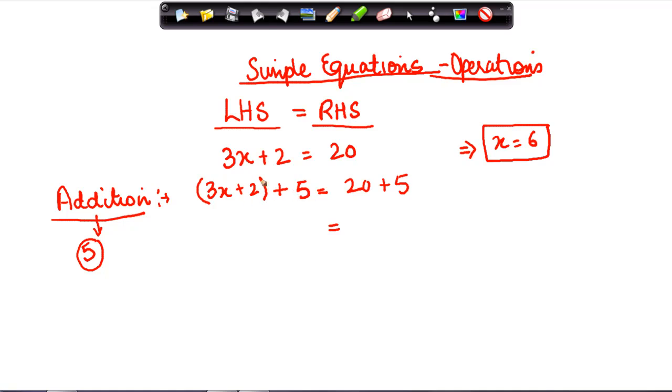We know that in case of such brackets, addition is commutative, which means that even if we add this numeric number to this, it would not make a difference. So, I write 3x plus 7 is equal to 25.